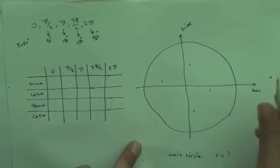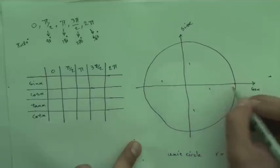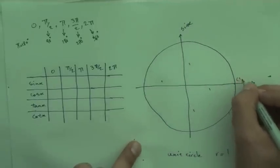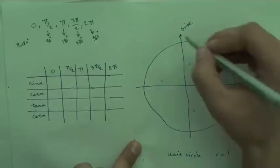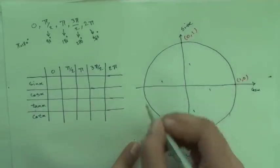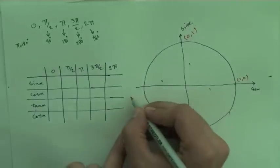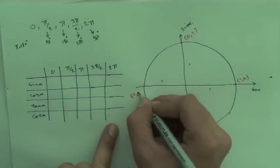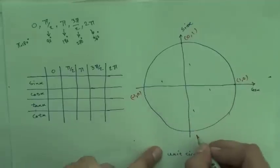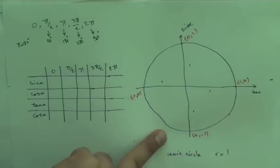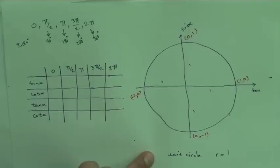Now I'll put in the points. This point on the right-hand side of the x-axis has y = 0 and x = 1, so it's (1, 0). The top of the y-axis is (0, 1). The left-hand side is (−1, 0). The bottom of the y-axis is (0, −1). Easy.